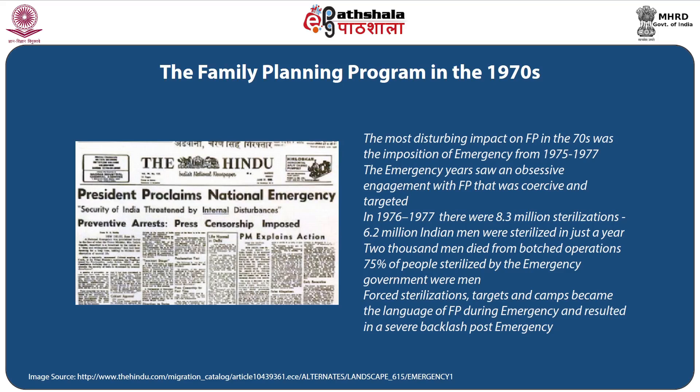The emergency years saw an obsessive engagement with family planning that was coercive and targeted. In 1976–77, there were 8.3 million sterilizations. 6.2 million Indian men were sterilized in just a year. 2,000 men died from botched operations. 75 percent of people sterilized by the emergency government were men. Forced sterilizations, targets, and camps became the language of family planning during emergency and resulted in a severe backlash in the post-emergency period.